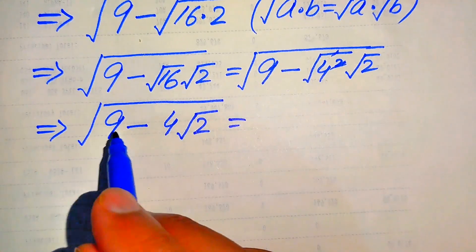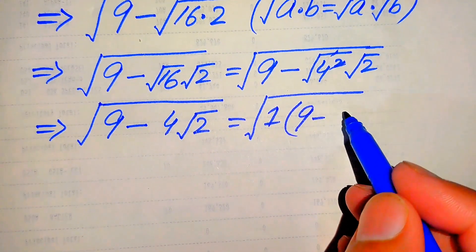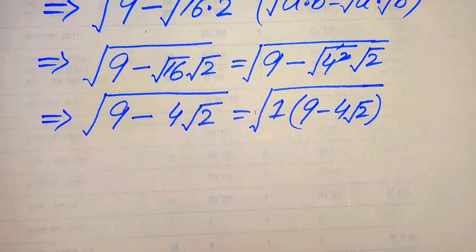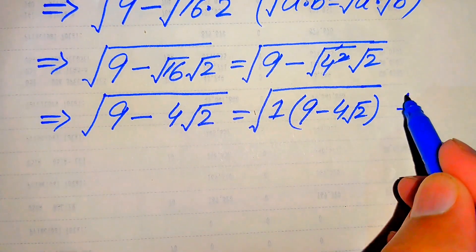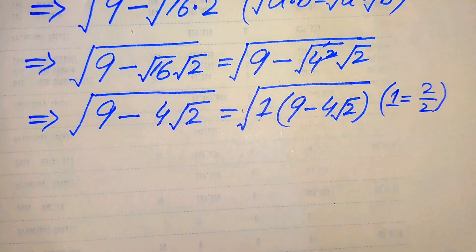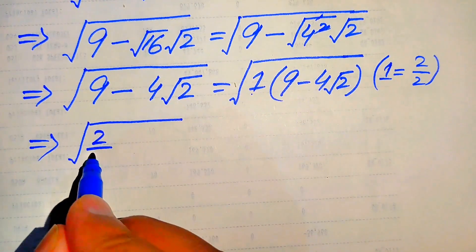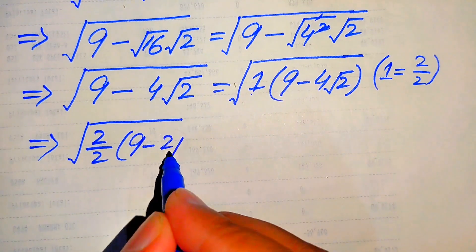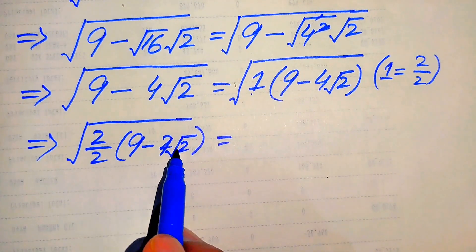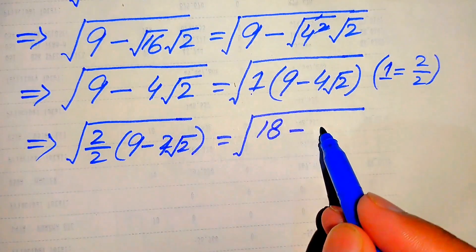Now we write the term inside the square root sign in a new form. We write it as 1 times of 9 minus 4 times square root of 2. We write 1 as 2 over 2, so it becomes the square root of (2 over 2) times (9 minus 4 times square root of 2). Multiplying 2 through both terms and dividing by 2 gives us 18 minus 8 times square root of 2, all divided by 2.